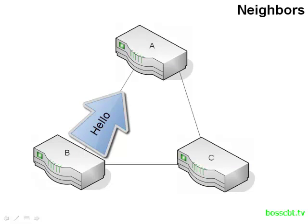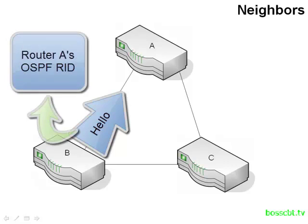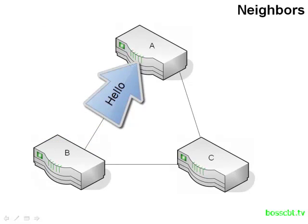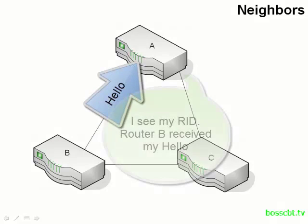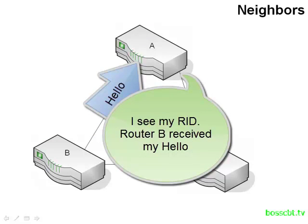When router B sends back that hello packet, it's going to include a little bit of information about router A — specifically, it's going to list router A's router ID inside that hello packet. When router A receives that hello packet back from router B, it's going to see its own router ID inside that message. That's a key bit of information, because once it sees that router ID in the packet, it knows that router B received the hello message and has started to communicate with router A.